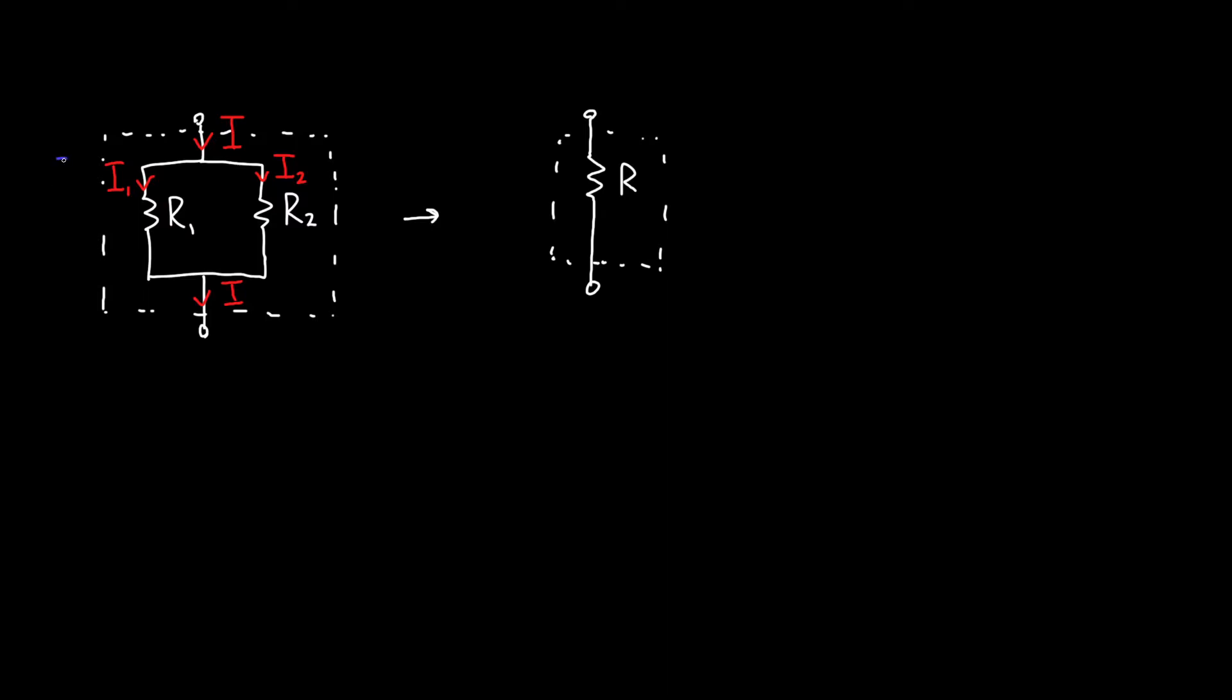Now, what about the voltage? Well, in this case, our voltage on the left hand side and our voltage on the right hand side, you might notice, are exactly the same. So the voltages, because the resistors are connected at the top and the bottom, that means that the electric potential at the top is the same, and the electric potential at the bottom is the same. So the voltage across the resistors is the same.